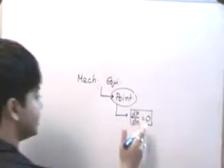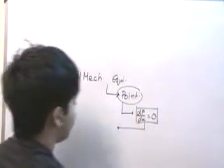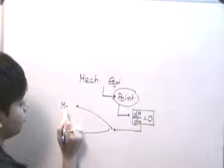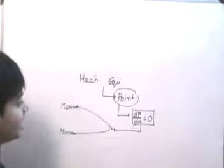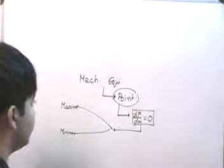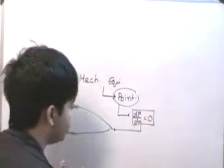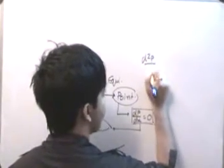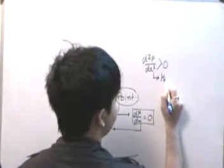This condition essentially corresponds to a vanishing first derivative, wherein we get the local minima and the local maxima. So this state corresponds to two points: the first is called the maxima point and the second is called the minima point. If dp/dx is equal to zero, then the body is in equilibrium. Whether the body is in unstable or stable equilibrium is determined by the second derivative, d²P/dx². If d²P/dx² is greater than zero, this corresponds to the state of minima.